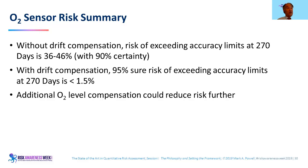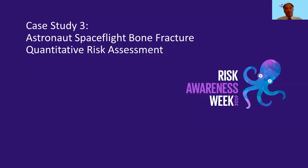To summarize case study two: without drift compensation, the risk of exceeding the accuracy limits by 270 days — we're 90% sure it's between 36% and 46%. With drift compensation, we're 95% sure the risk is less than 1.5%. Easy to make a decision, even though nobody had specified how sure they needed to be. The decision was made quickly and comfortably when these results were presented.